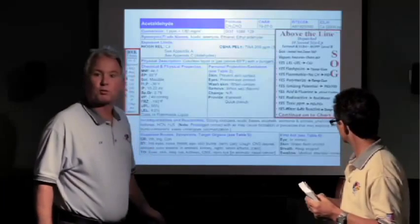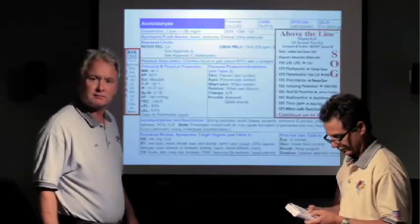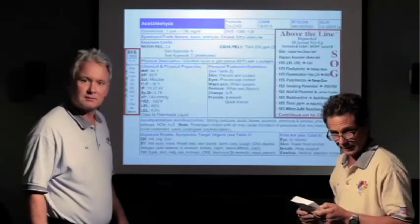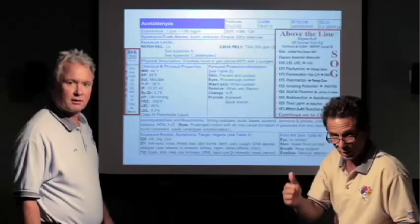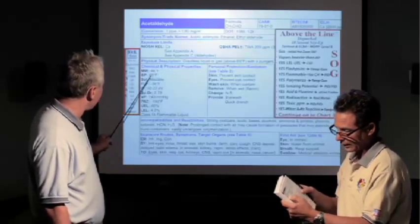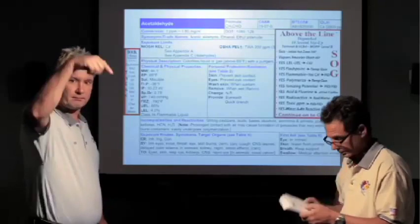We predicted that the vapors were heavier than air. What is the molecular weight of air? You look at the back of your charts, chart six. It's atomic mass unit or the weight of 29. So look at acetyl aldehyde. It weighs 44. Where's it gonna go? Down.